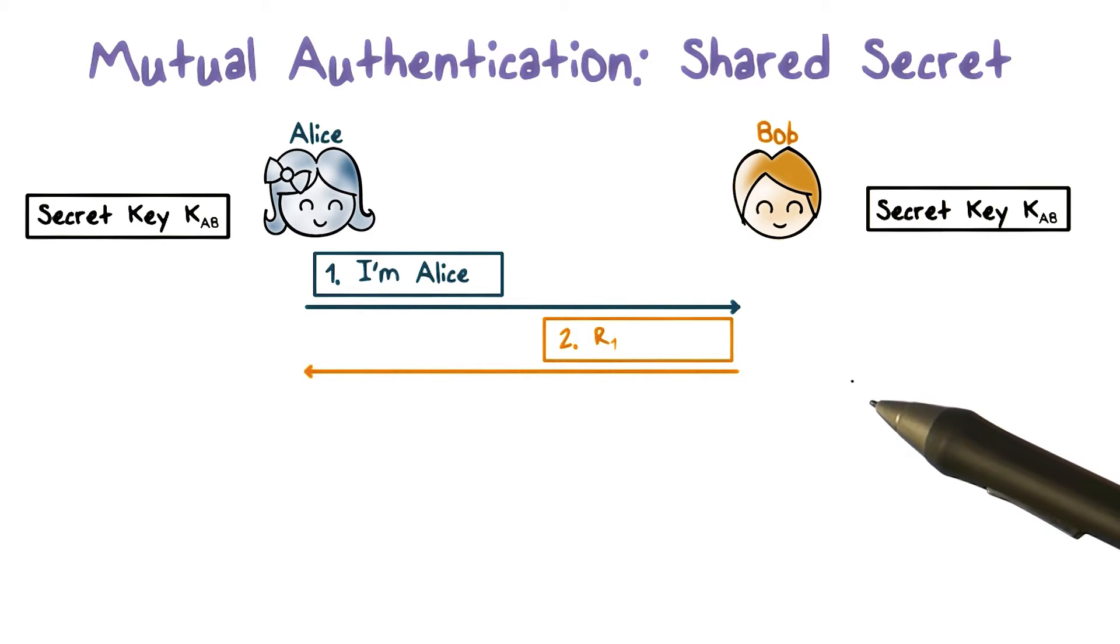Second, Bob says to Alice, really, prove it. And he sends a random value R1, which we call a challenge.